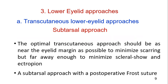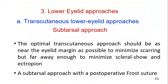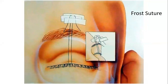The second important point is that the lower the incision is made on the eyelid, the lower the risk of scleral show and ectropion, but the more noticeable the scar. Therefore, we believe the optimal transcutaneous approach should be as near the eyelid margin as possible to minimize scarring, but far enough away to minimize scleral show and ectropion. So for the subtarsal incision, you must stay in the subtarsal area, closer to the lid margin.